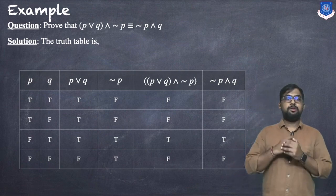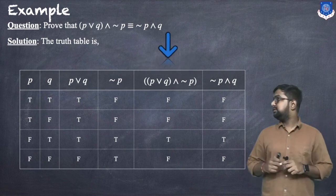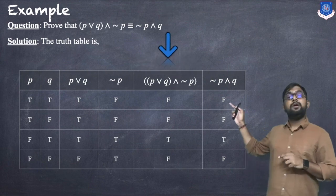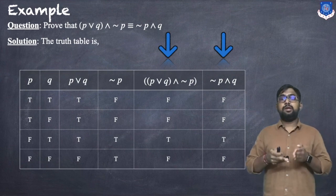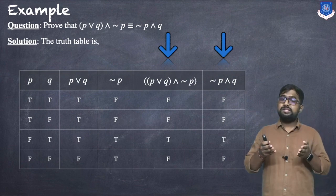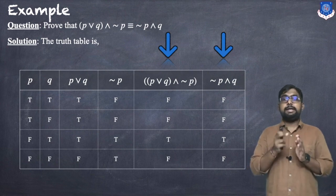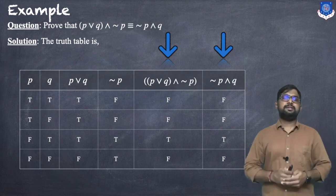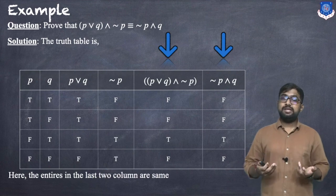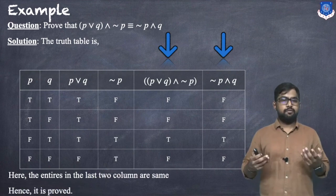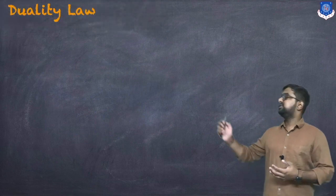Now we check logical equivalence by comparing the column for (p∨q)∧¬p and the column for ¬p∧¬q. All entries are the same: F, F, T, F — so we can say it is logically equivalent.